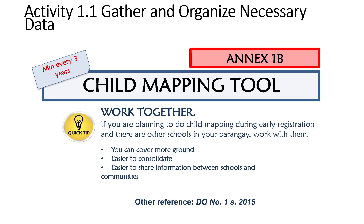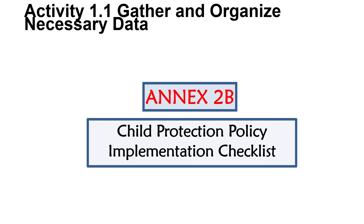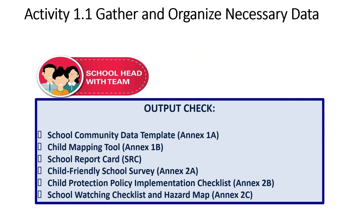We also have the child mapping tool. You can use a child-friendly school survey because we want our schools to be child-friendly. You should also check the child protection policy checklist, and you can have student-led school watching and hazard mapping because we prioritize the safety of our learners. The outputs of gathering and organizing necessary data include: the school community data template, the school mapping tool, and the school report card. These are preparatory activities you need to gather ahead before doing the SPT planning.